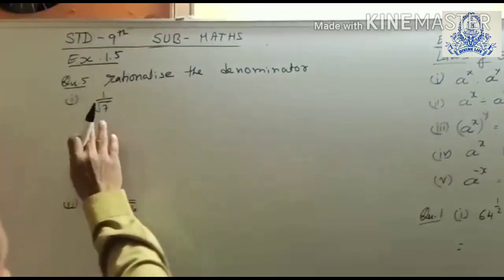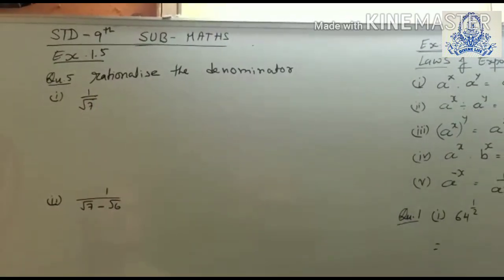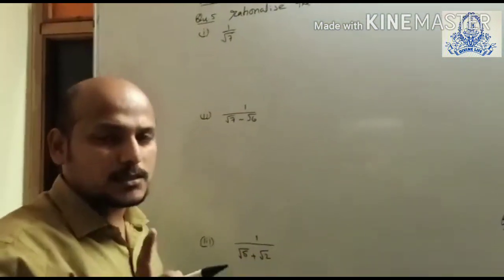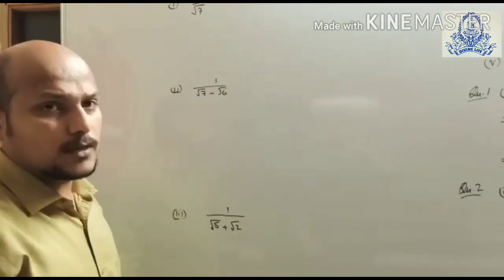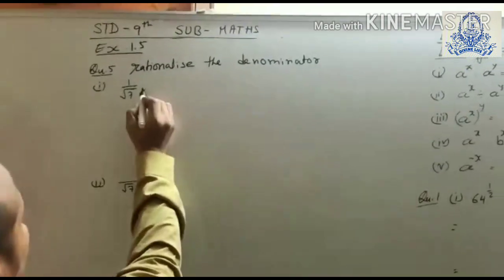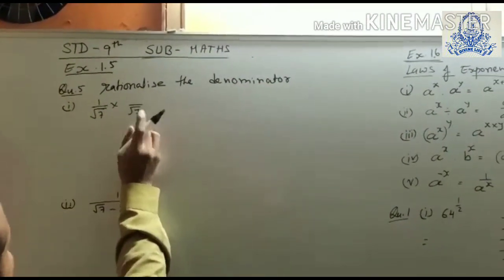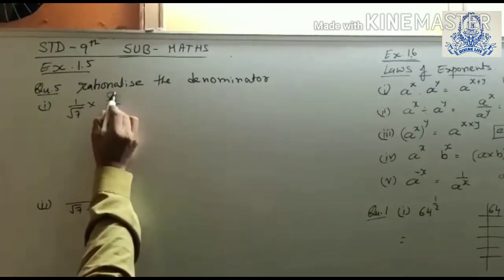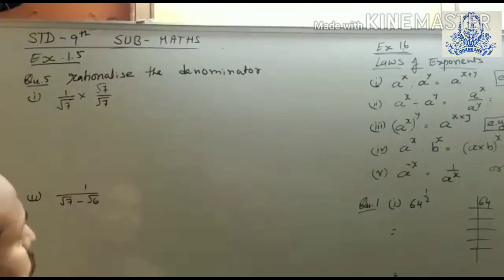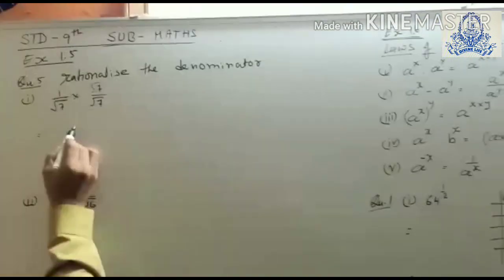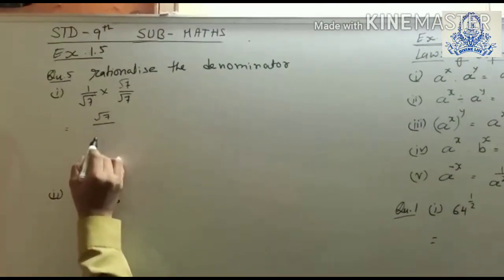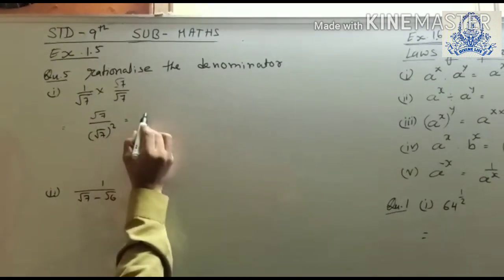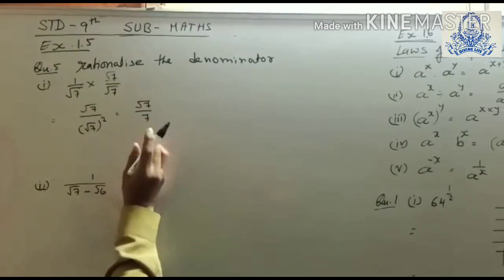Here we can see the given question is 1 by root 7. In the denominator there is root 7, and root 7 is an irrational number. To convert it to a rational number, we multiply root 7 by root 7, which gives 7. So we multiply both numerator and denominator by root 7, giving root 7 upon root 7 whole square. The square and square root cancel each other, so our answer is root 7 upon 7.